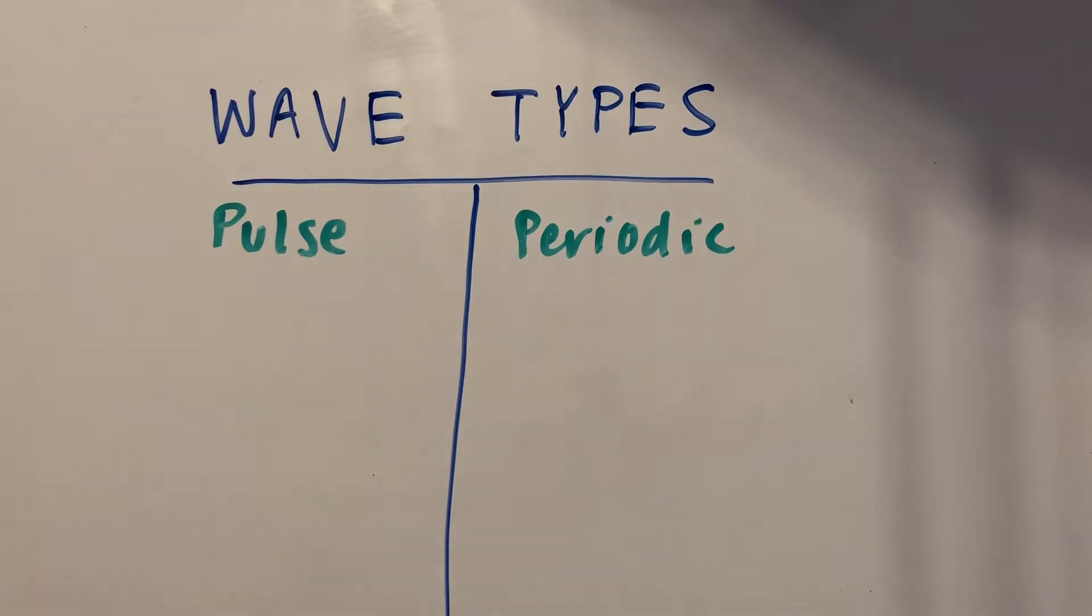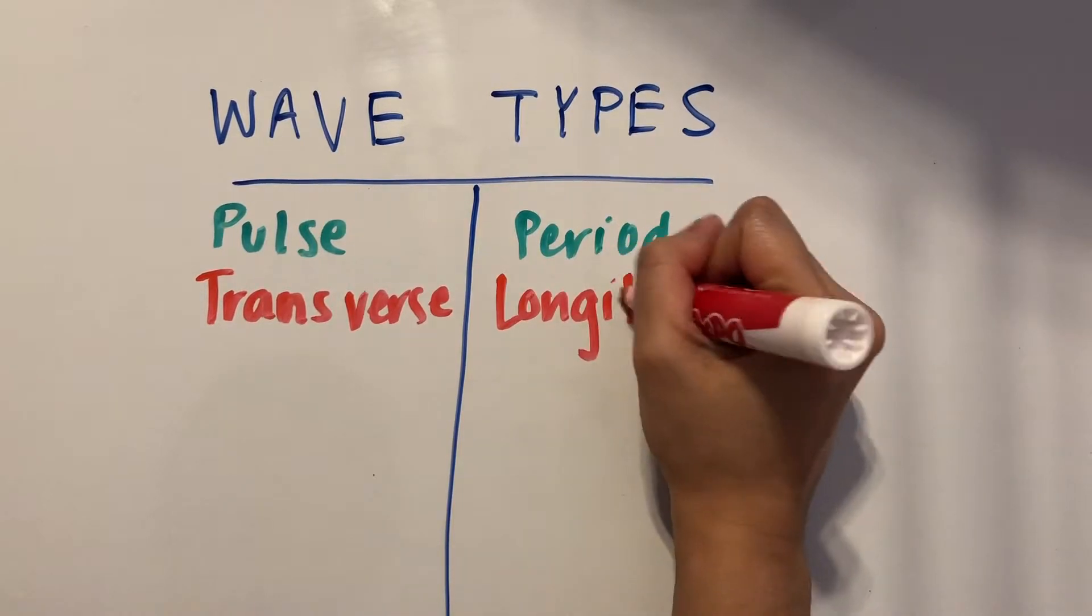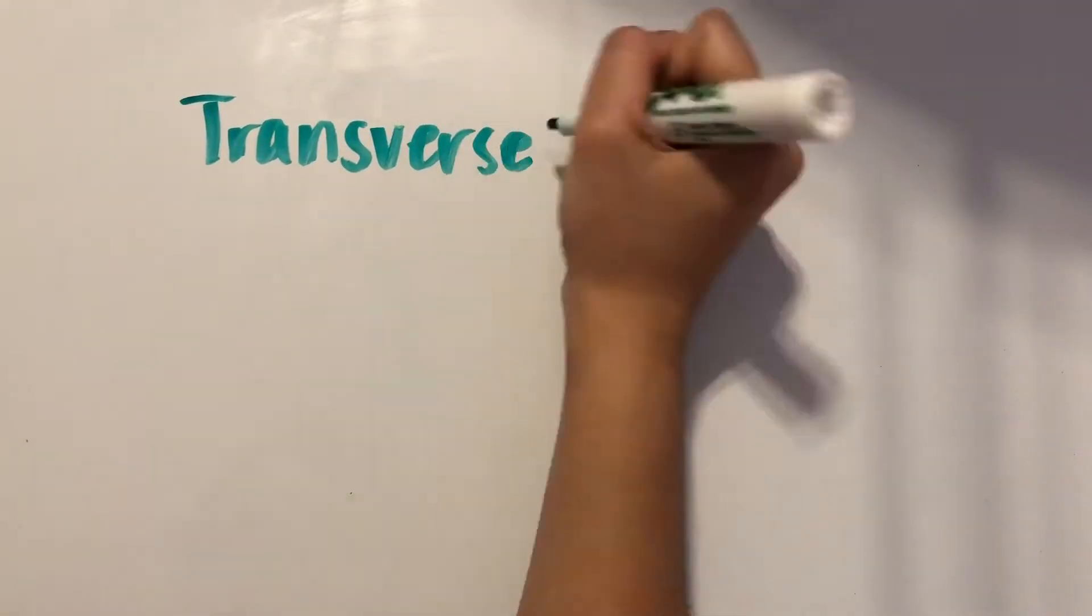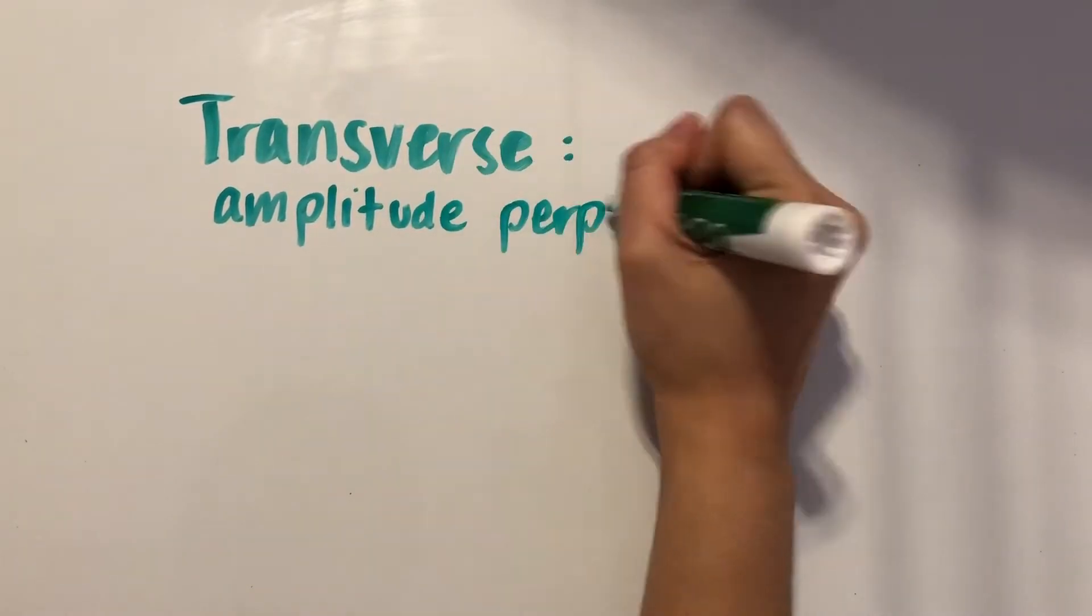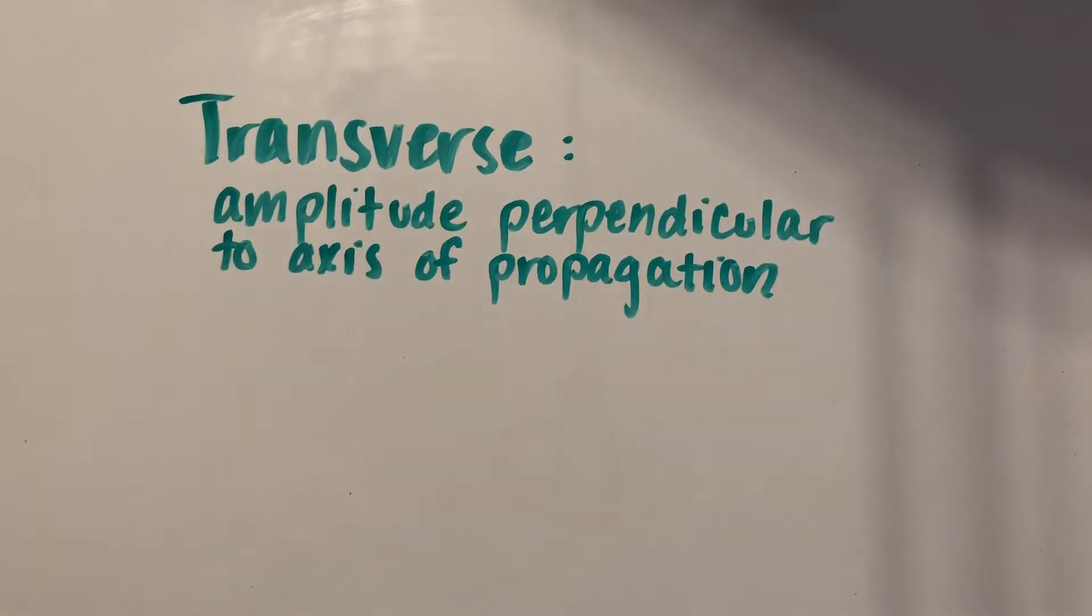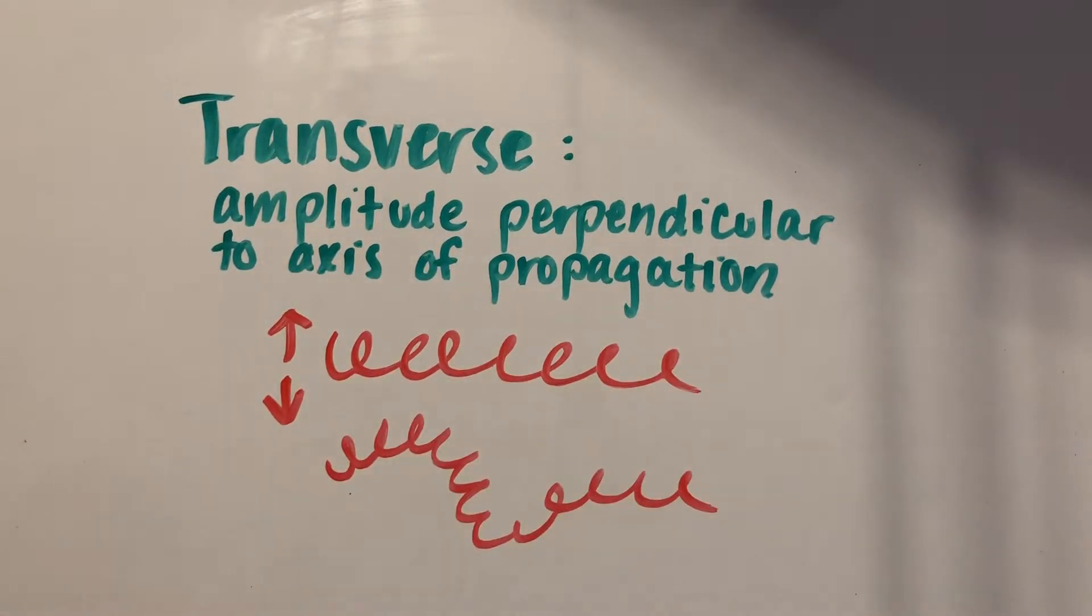Then we have transverse and longitudinal waves, which describe the direction that the wave moves in with respect to its direction of propagation. Transverse waves move so that their amplitude is perpendicular to the axis of propagation. For example, if we have a spring and we shake one end of it up and down, the resulting wave would be moving to the right, but the amplitude would be pointing in the up and down directions.